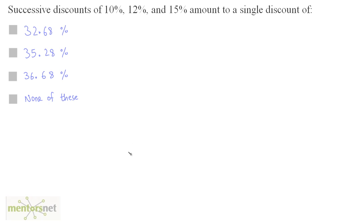Successive discounts of 10%, 12%, and 15% amount to a single discount of? Let us first write what a discount means. When you have a discount of some percent, let's say D%, then you always calculate the discount on the selling price.